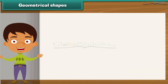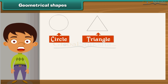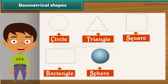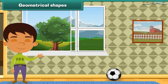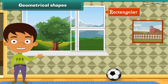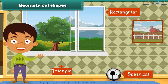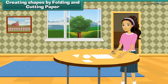Geometry is the study of lines, curves, and shapes. There can be many different shapes — circle, triangle, square, rectangle, sphere, and cube, to name a few. If you look closely, you will see a variety of geometrical shapes around you. The window of your room is rectangular, the tile design is a triangle, the ball is spherical, and the painting frame is square.